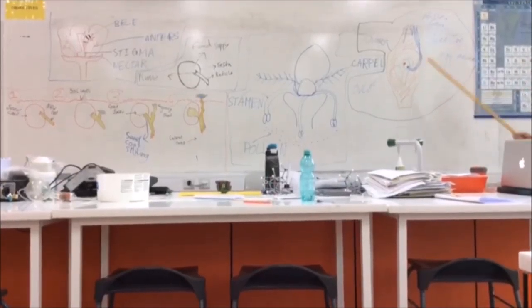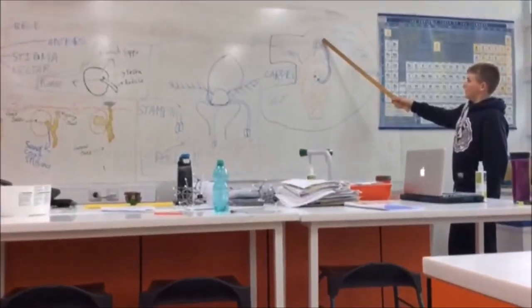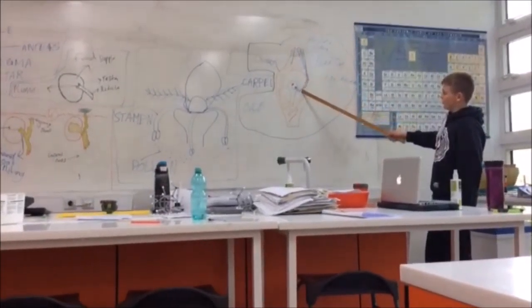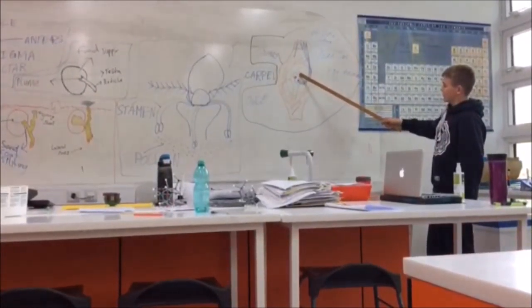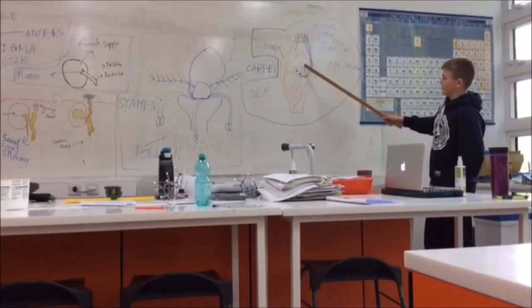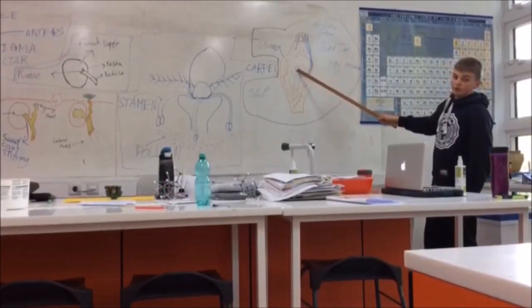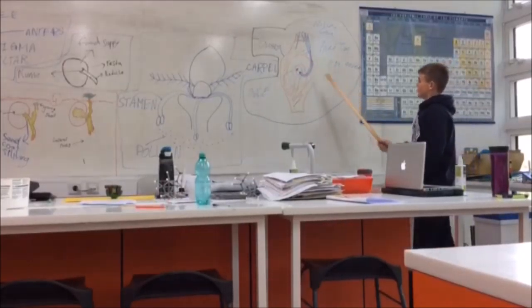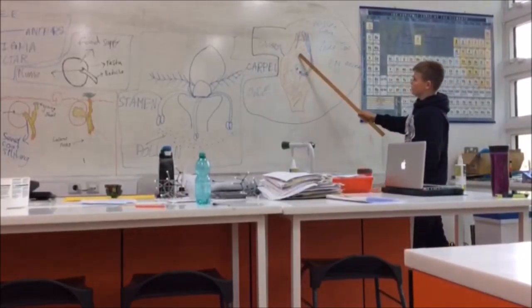Next I'm going to talk about fertilization. This is displayed in this diagram here. When the pollen hits the carpel up here, it creates a shoot to run down into the ovary. The male and the female parts of the plant will connect in this to make an egg and a zygote.